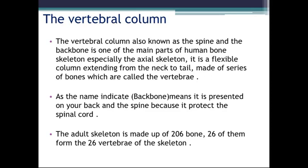When we say 'vertebral column,' 'column' refers to its column shape, and 'vertebral' means it is made up of vertebrae. Vertebrae are irregular bones that make up the vertebral column. The structure is also called the spine — because the vertebral column forms a canal that encircles what we call the spinal cord.